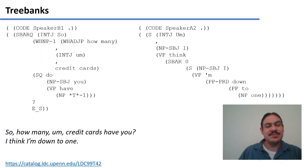These are examples from the Penn Treebank. And as you can see, they have to deal with all sorts of details of English sentences, for example, saying mmm, as in, so how many credit cards have you? I think I'm down to one. So here there's the code for disfluencies, for example saying mmm, and so forth.